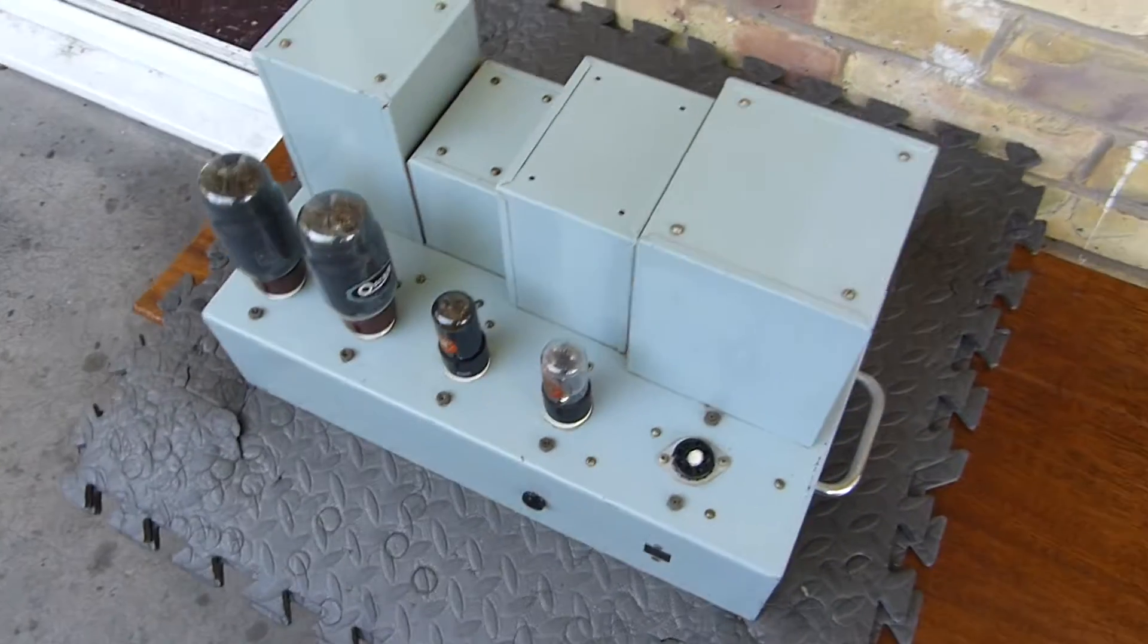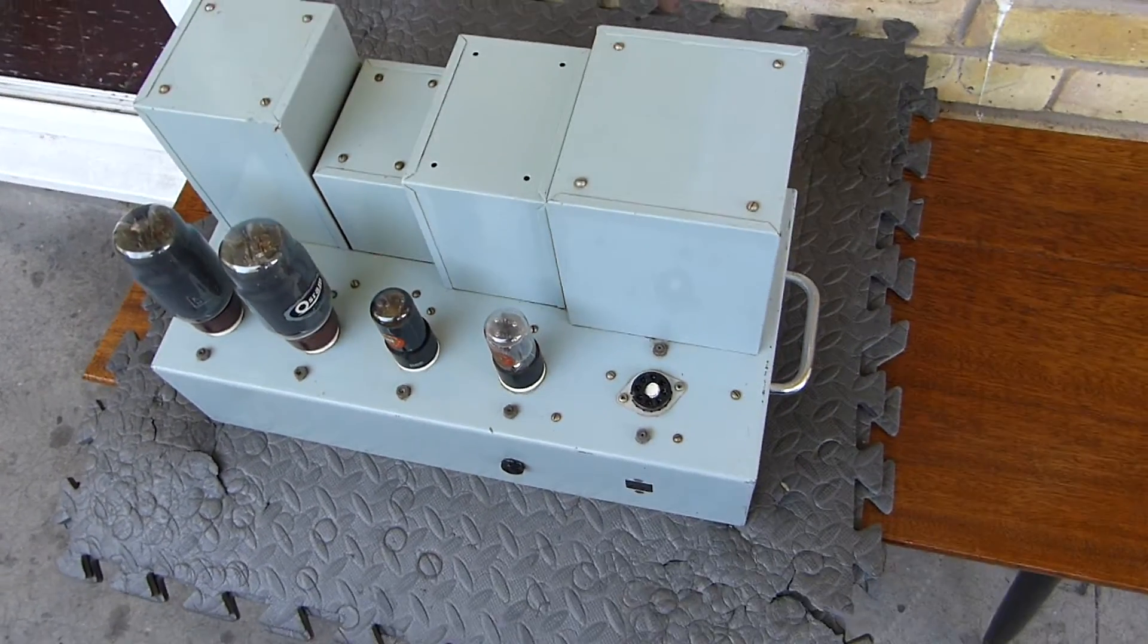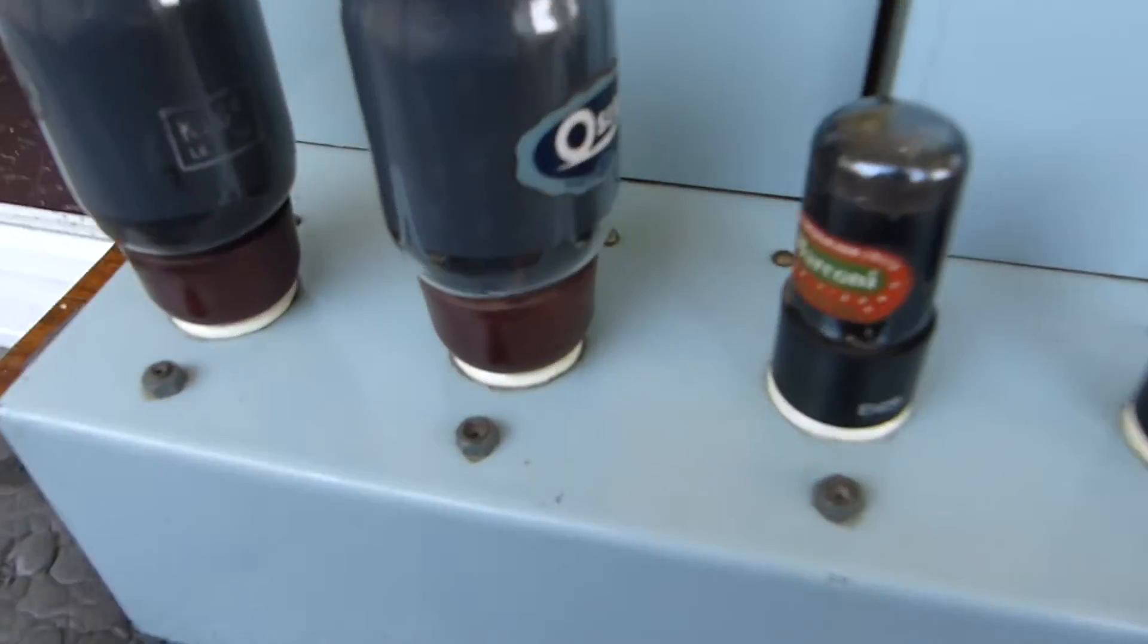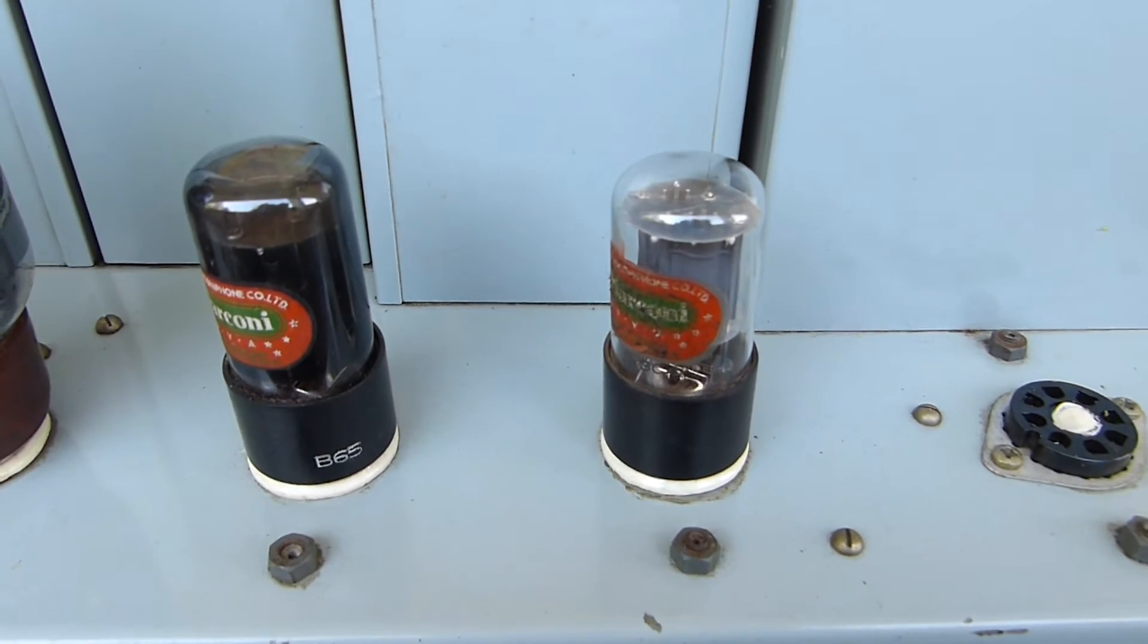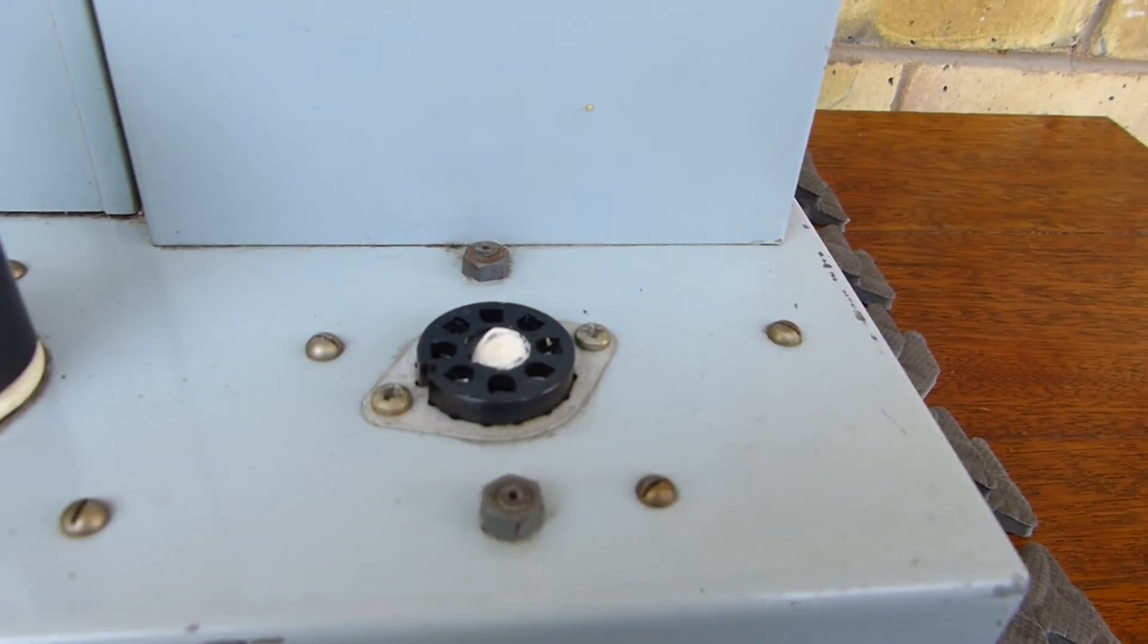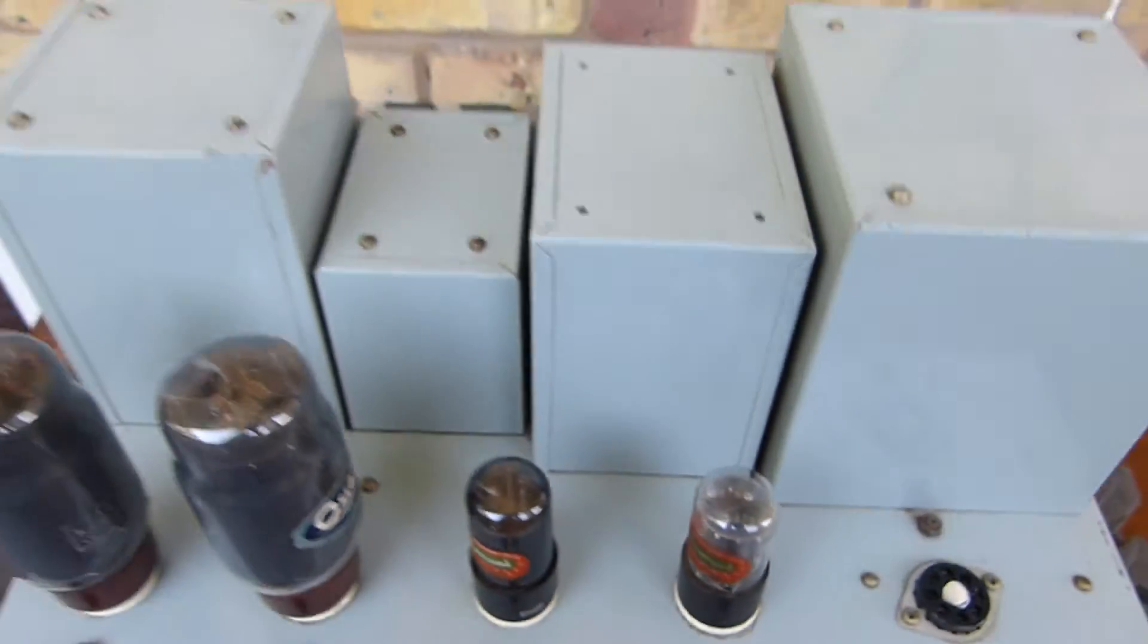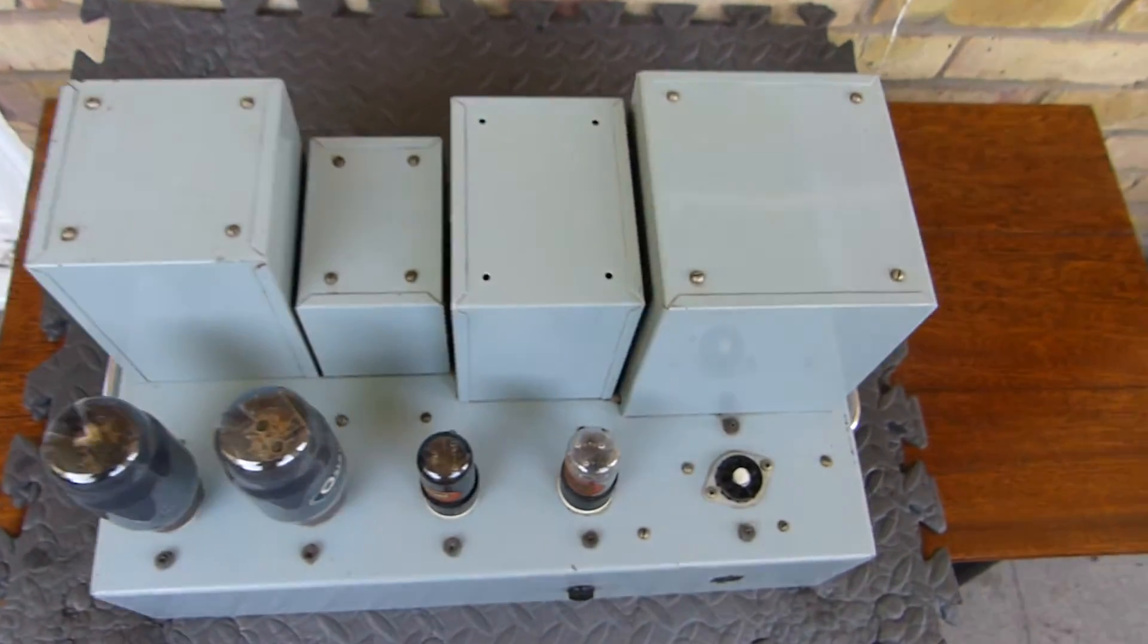Right, here we go. What I believe to be a Williamson amplifier with KT66 Osram output tubes, 6B5s. The rectifier has been changed for a solid state circuit. Massive transformers as you can see.